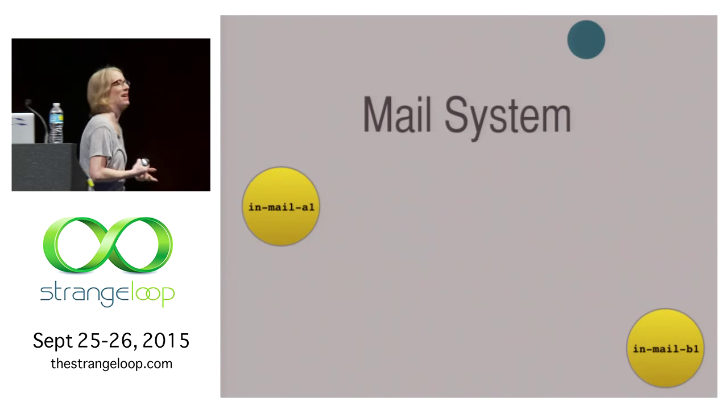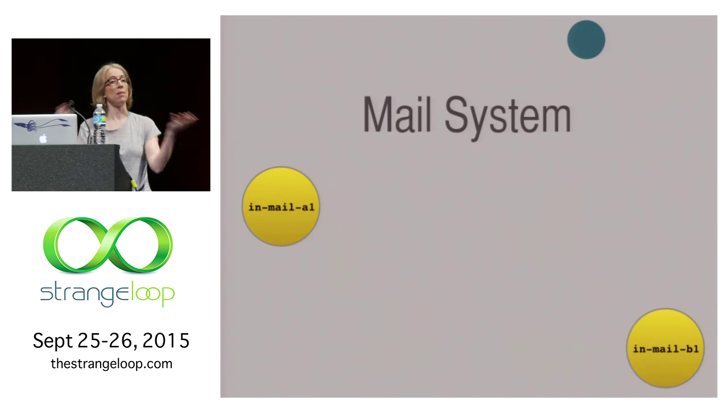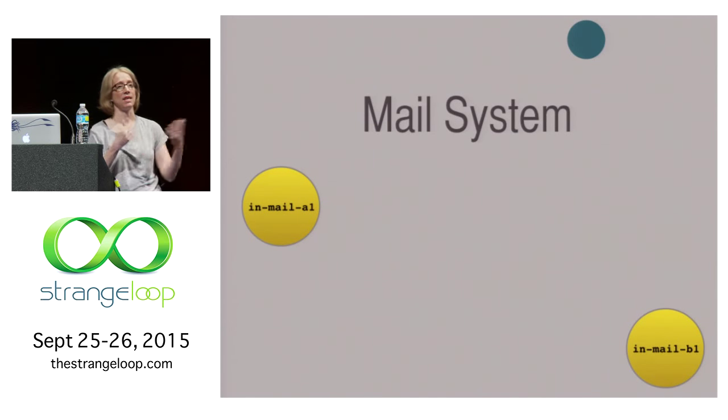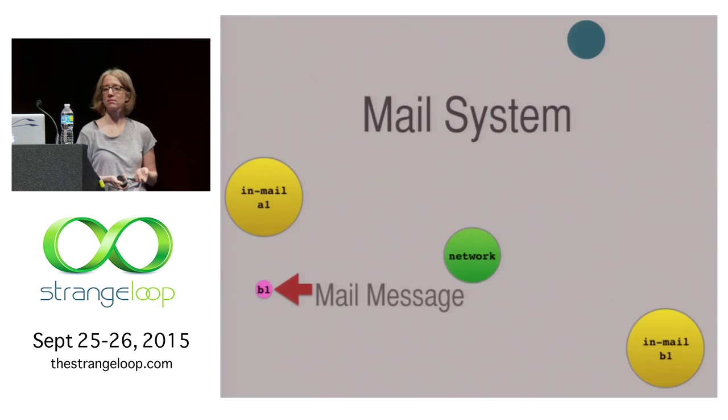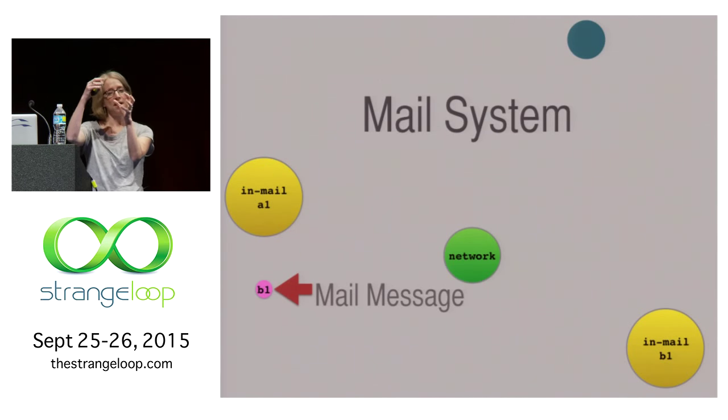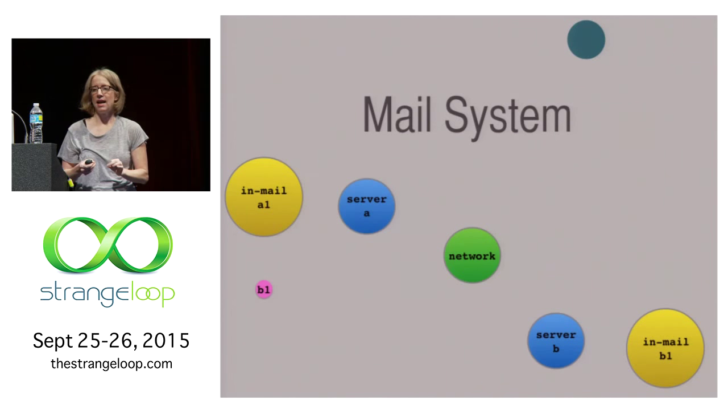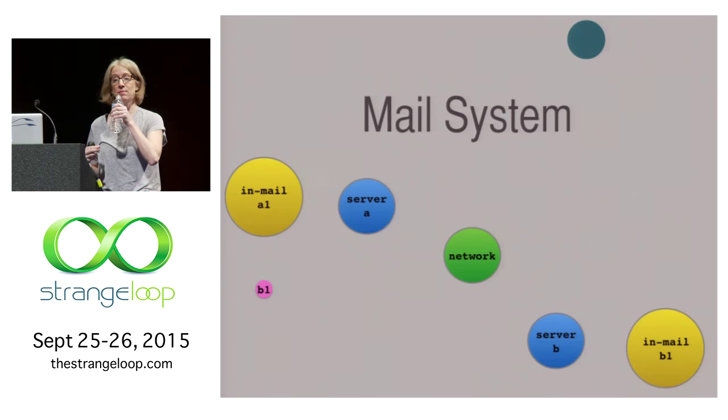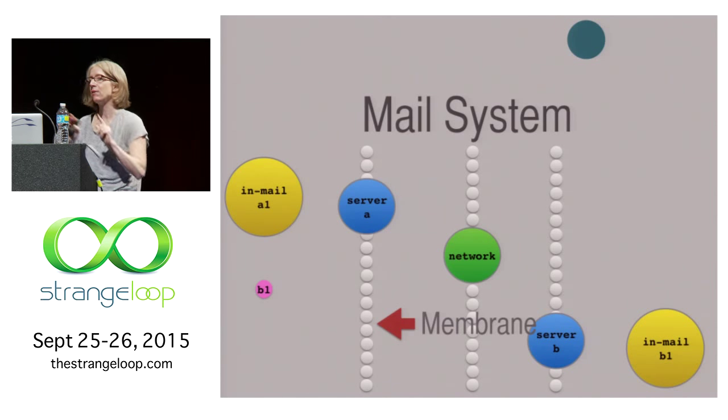We could model a mail system and have it be self-organizing by using molecule example again. This time, we're going to have mailboxes. Mailboxes on the mail servers are going to be regarded as molecules. You're going to have an in-mail box for A1. You're going to have on the other side an in-mail box for B1. In the middle, you're going to have a network molecule. Then we're going to have a mail message be addressed to B1. So it's going to want to get over to the in-mail box B1. We're also going to have another couple molecules. These are server molecules. We're going to have one for the A mail system, and we're going to have one for the B mail system.